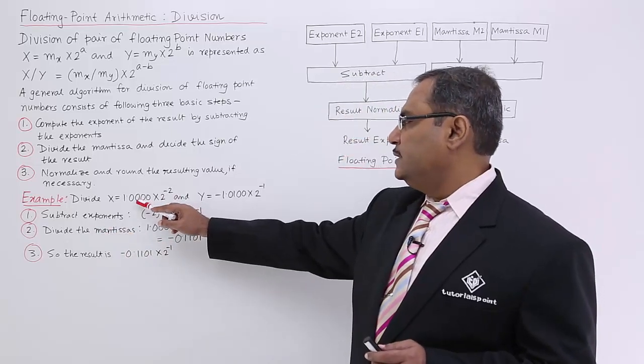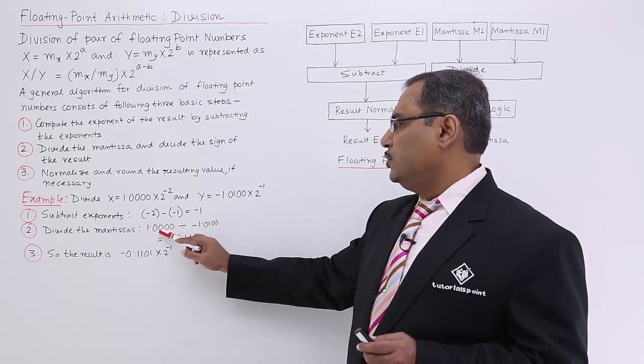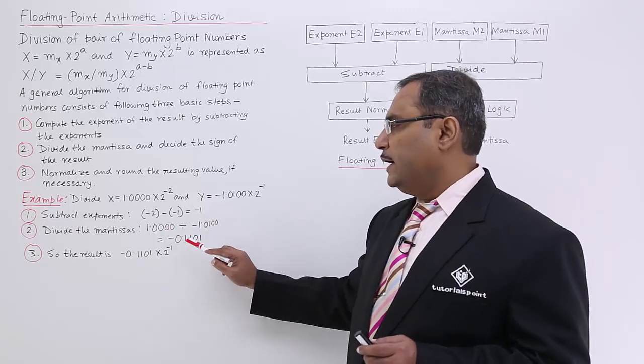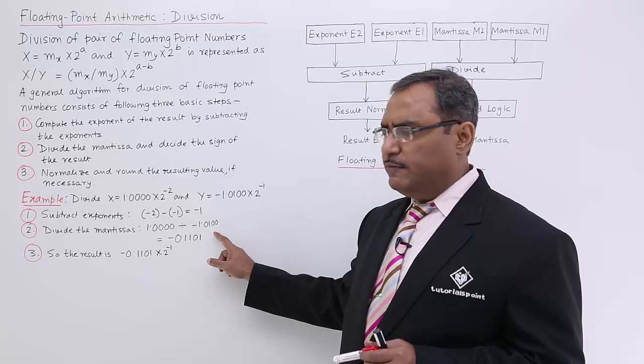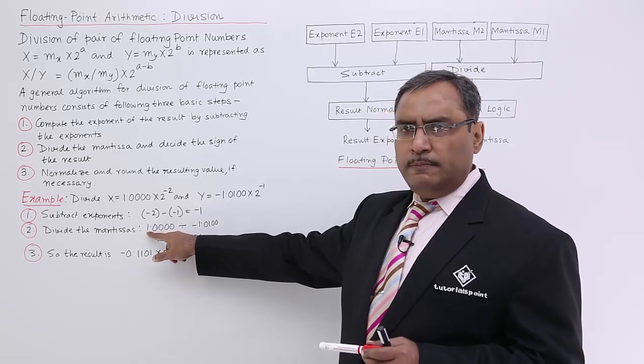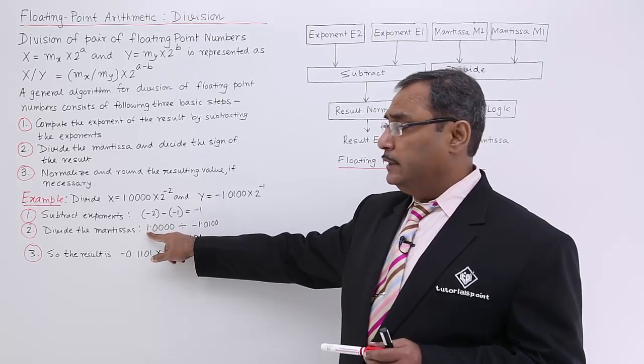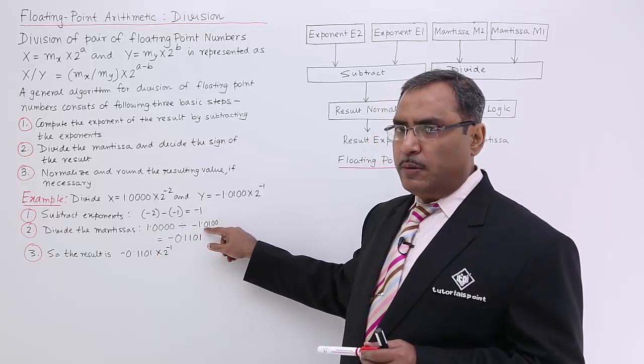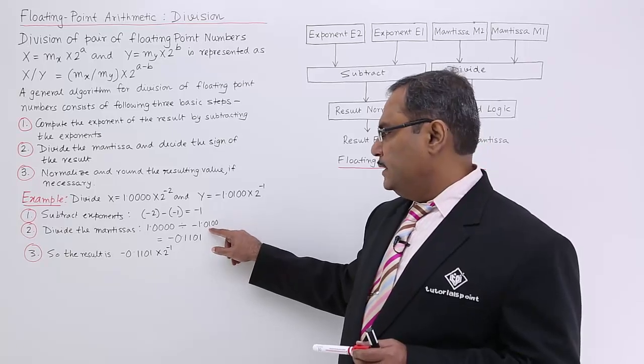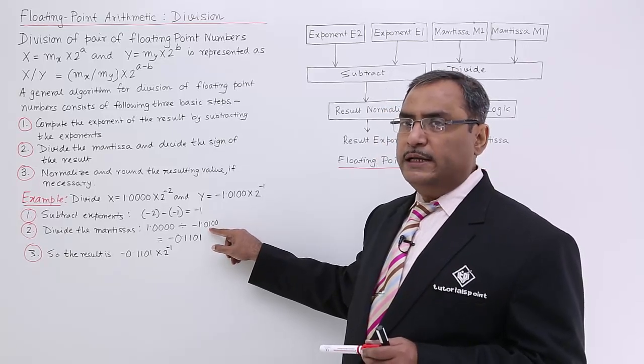Divide the mantissa. So here this is the mantissa, this is the mantissa. So you are going to divide them and you are getting this particular result. So it is very simple to divide. You know it is 1 if you convert it to the decimal number, and here it is 0.5, the place value is 2 to the power of minus 1. So 0.5, here the place value is 2 to the power of minus 2.